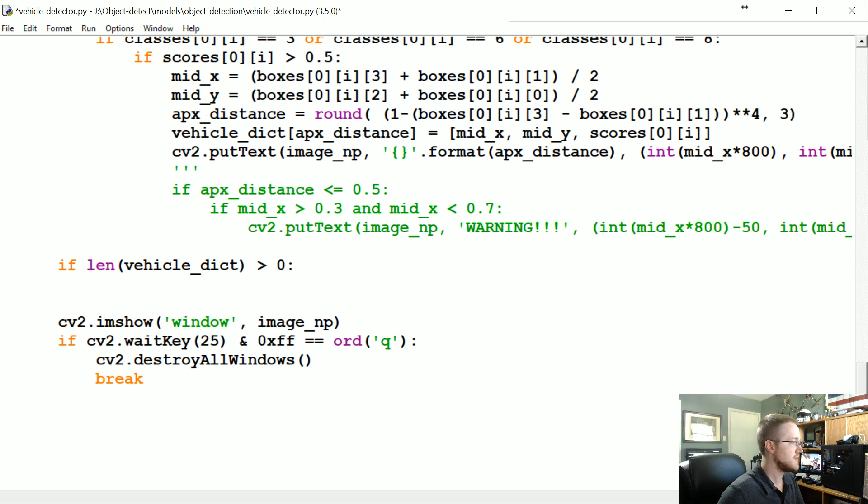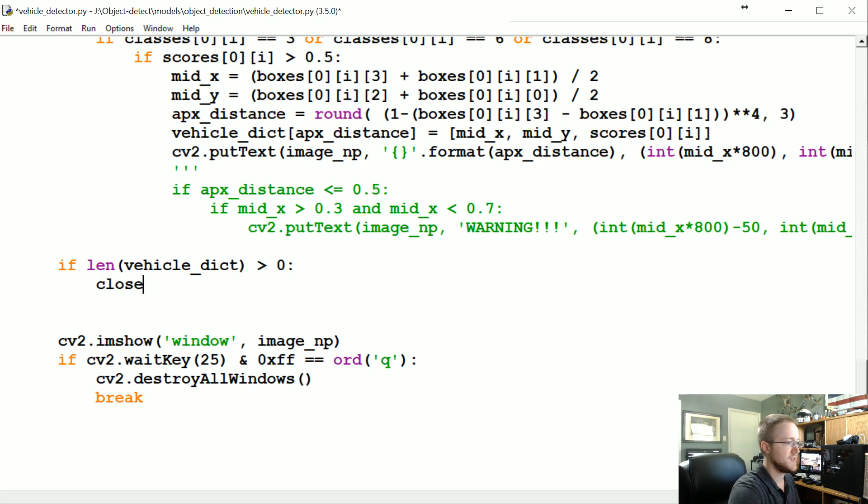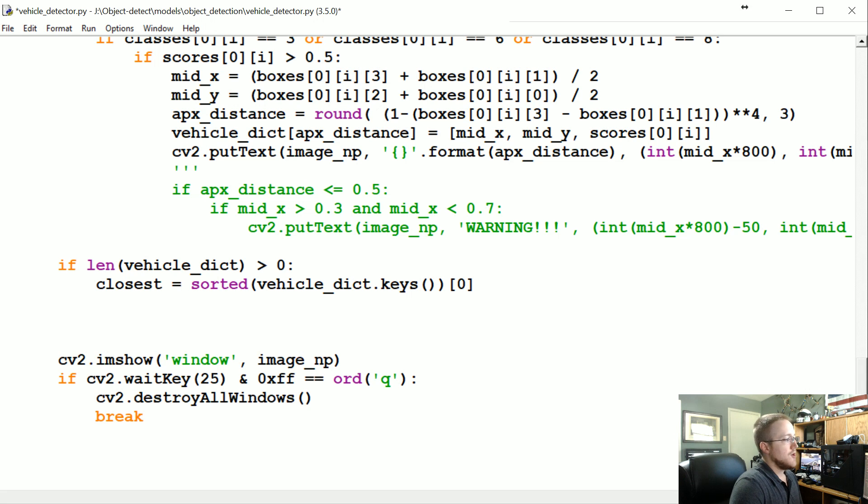Now what we're going to say is if the len of our vehicle_dict is greater than zero, because we might actually not find any cars, there's going to be times when there's no cars, so if there's no cars then whatever. But if the length of the vehicle dict is greater than zero, then we want to know what the closest car is. So first we're going to say the closest is equal to the sorted vehicle_dict.keys() and then we want the zero'th.